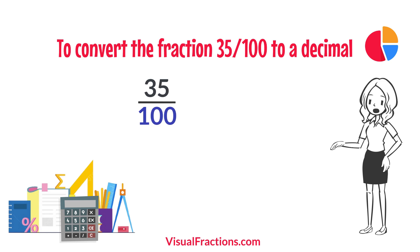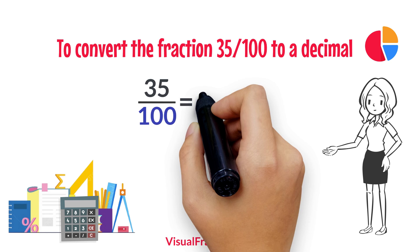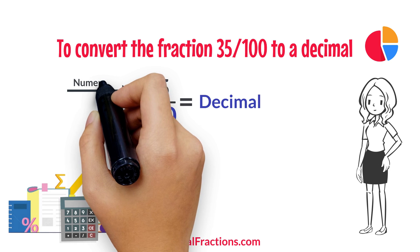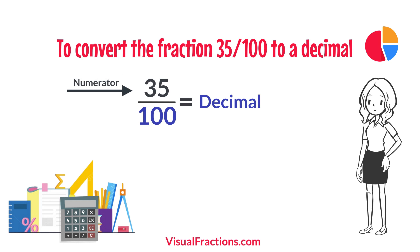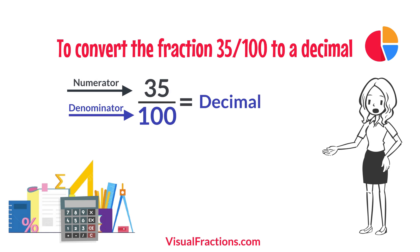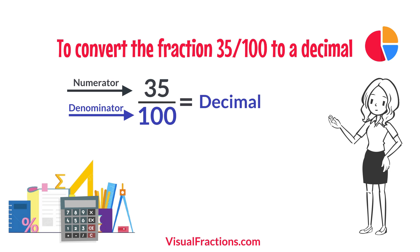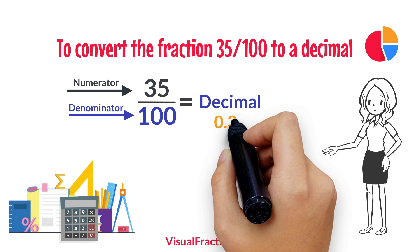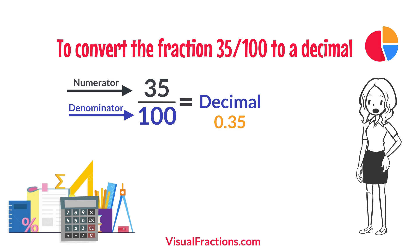To convert the fraction 35 one-hundredths to a decimal, all we need to do is divide the numerator, the top number, by the denominator, the bottom number. So we simply divide 35 by 100. The answer we get is 0.35.